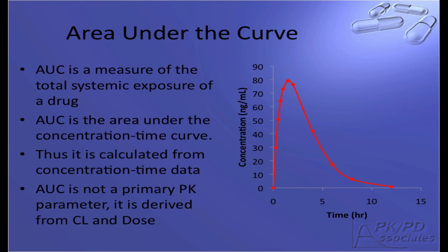AUC is the area under the concentration time curve and is a measure of the total systemic exposure of a drug over time. It can be calculated from the concentration time data, however, it is not a primary PK parameter. It is derived from clearance and dose, making it a secondary parameter.